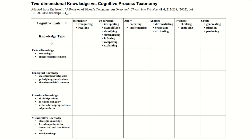Here it is. I actually really like this two-dimensional taxonomy — I find it's often easier to place things in it because it's less ambiguous. However, if you're new to Bloom's taxonomy, I really don't recommend it, and for our purposes it would be like swatting a fly with a sledgehammer.